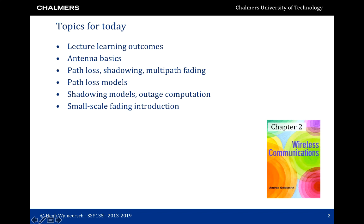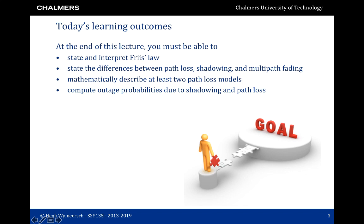In particular we'll talk about antennas, path loss, shadowing, and multipath fading. Multipath fading will be covered in more detail in the next two lectures, as will models for path loss and shadowing. Specific learning outcomes for today are the statement and interpretation of Friis law, differences between path loss, shadowing, and multipath fading, the description of at least two path loss models in mathematical terms, and the ability to compute outage probabilities due to path loss and shadowing.